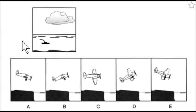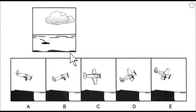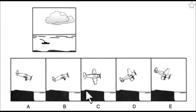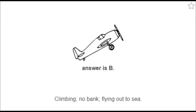Here we have an aircraft — not a lot of land showing. The horizon line is slightly below the midpoint of the height of the square, so that indicates a climb. The horizon is parallel to the dashboard — what in the aircraft would be called the glare shield. We can throw out the banking airplanes. Not a lot of land showing — I would say it's climbing. Answer: B.